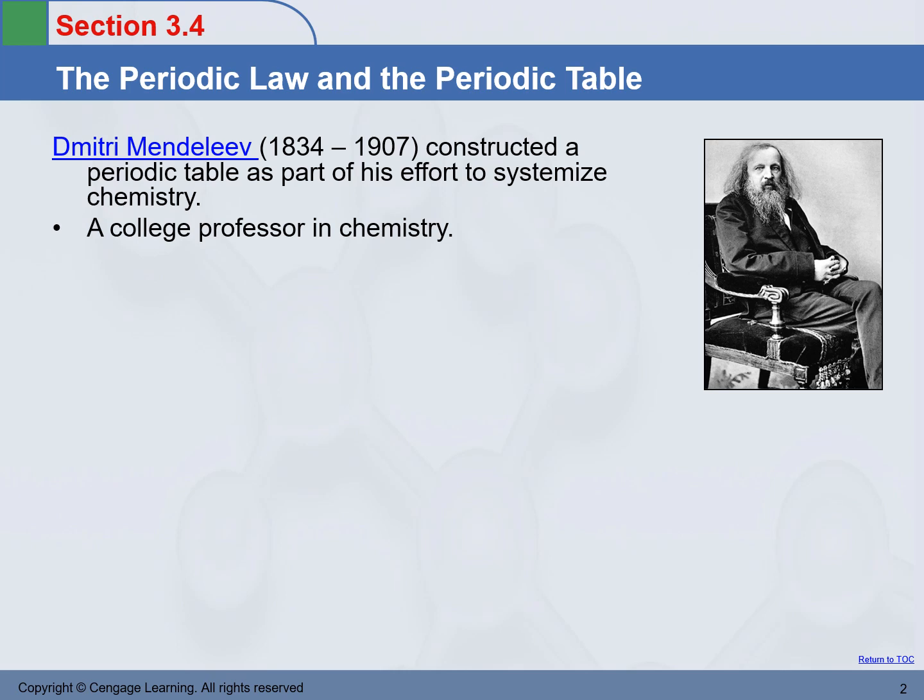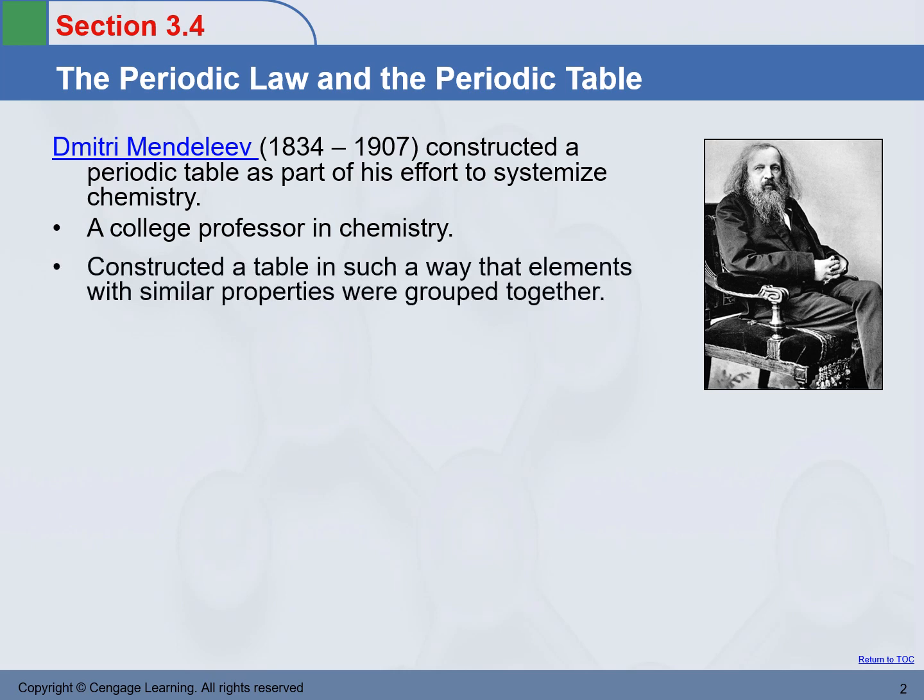What Professor Mendeleev was trying to do was construct a table — like what we sometimes do when we study — so that certain things are put together to help us learn or memorize. He was trying to make a table so that elements with similar properties would be grouped together, and that's what he did. He constructed the table in such a way that elements with similar properties were grouped together.